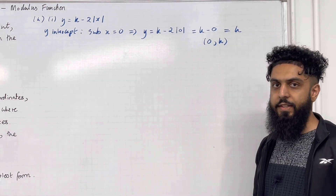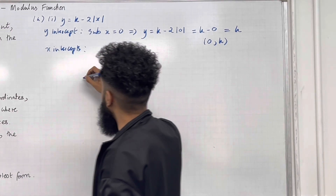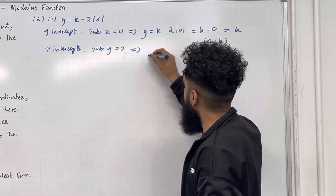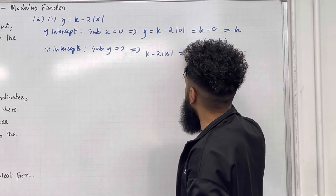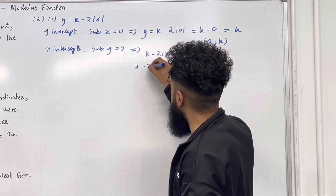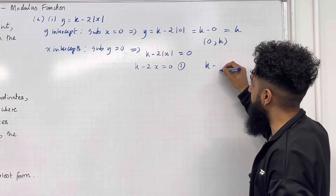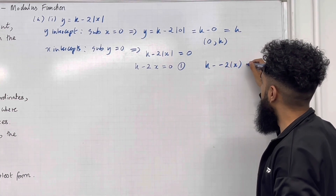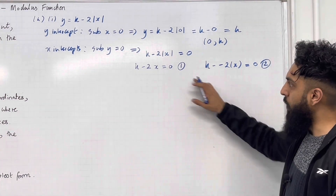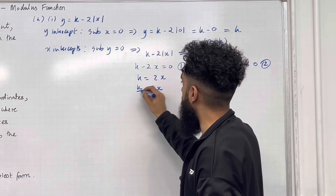Now I'm going to find the x-intercepts. I substitute y = 0, which gives k − 2|x| = 0. We can generate two equations. The first one is k − 2x = 0. From equation 1: k = 2x, hence x = k/2.